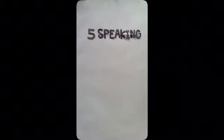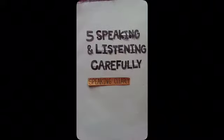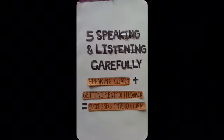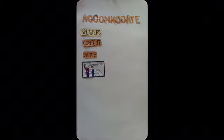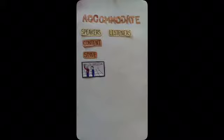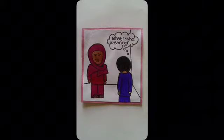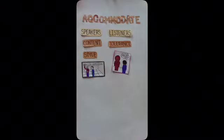Step 5 — speaking and listening carefully: speaking clearly plus getting plenty of feedback equals successful intercultural conversations. Speakers should adjust the content and style of their delivery to accommodate the needs of the listener. Listeners should be tolerant of accents, vocabulary choices, and other factors that may distract from the meaning of the speaker's message.